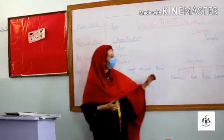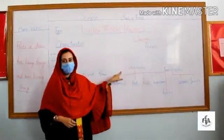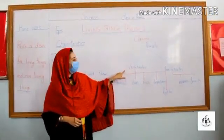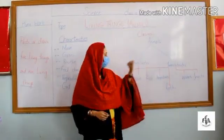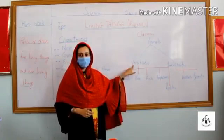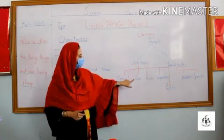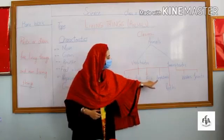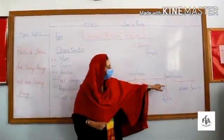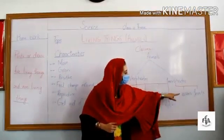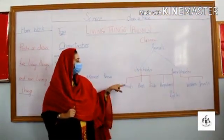Now we will discuss about vertebrates and invertebrates. Vertebrates are those animals which have a backbone, and invertebrates are those animals which do not have a backbone. Vertebrates are further divided into five classes: mammals, birds, fish, amphibians, and reptiles. Invertebrates include worms and insects.